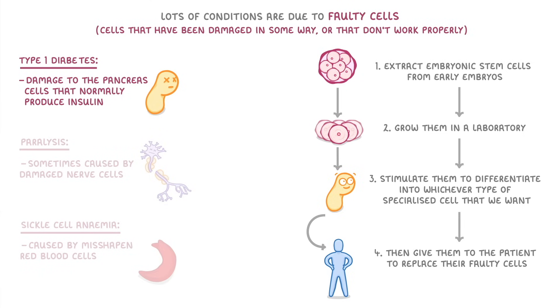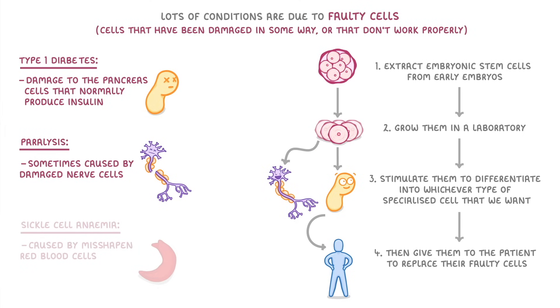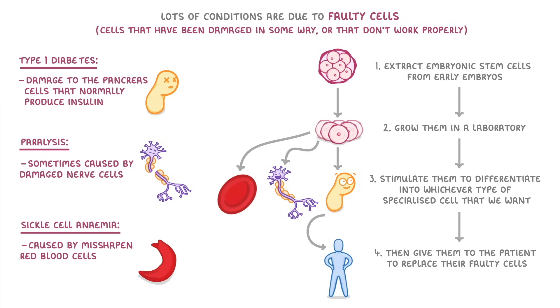In a similar way, if we wanted to treat somebody for paralysis we could use the same process to produce healthy nerve cells, or to treat sickle cell anemia we would differentiate them into healthy blood cells.